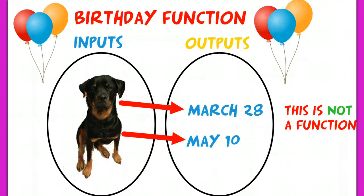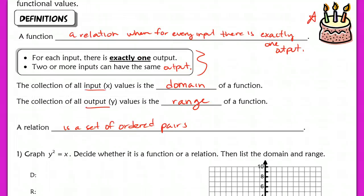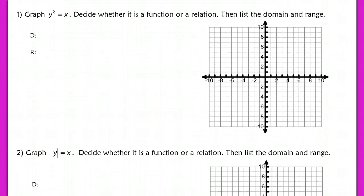But one input cannot have multiple outputs — that would not be okay. So Tank cannot have two birthdays; he cannot be born on two separate days. So this would not represent a function. Every input has to have exactly one output. More than one input can share the same output, but one input cannot have multiple outputs. That's the idea of a function — each person can have only one birthday, but two or more people can share the same birthday.